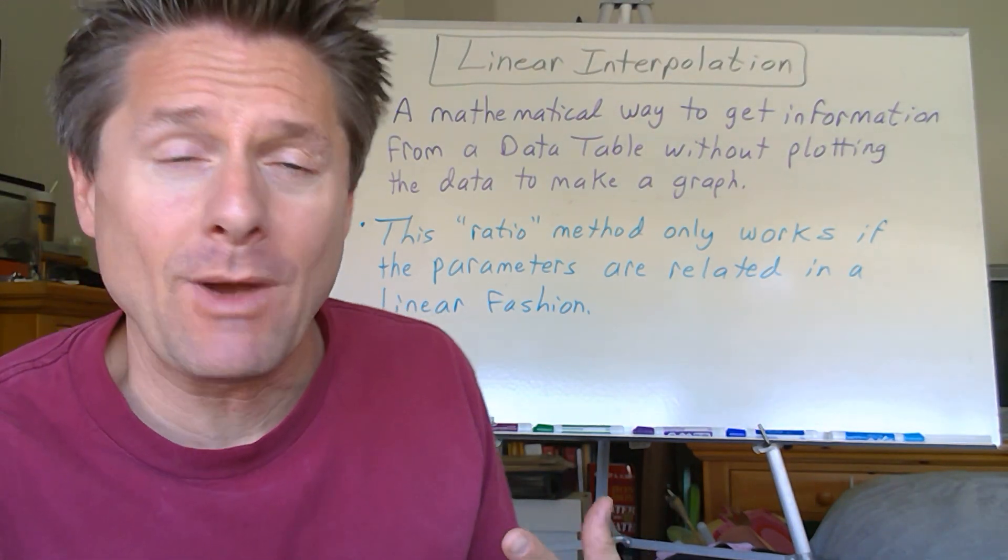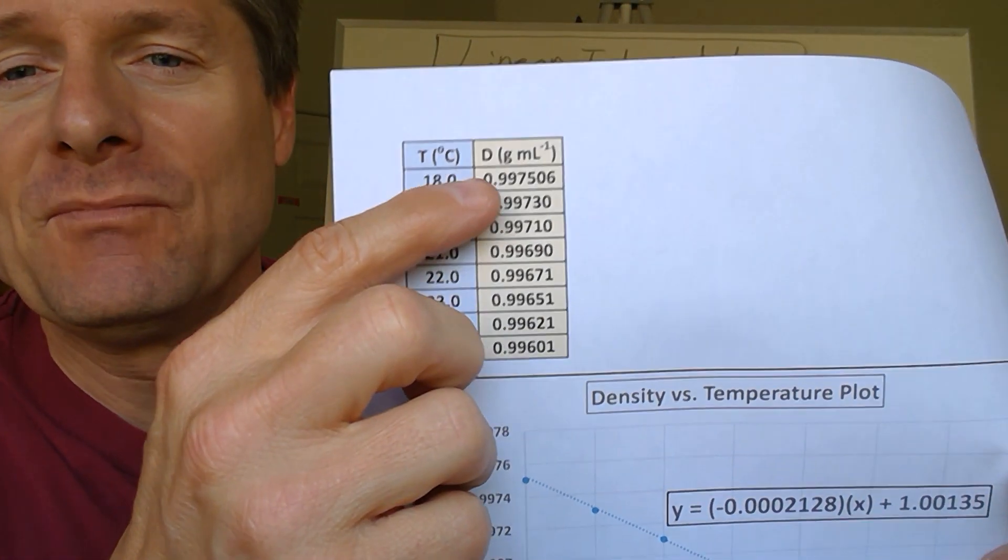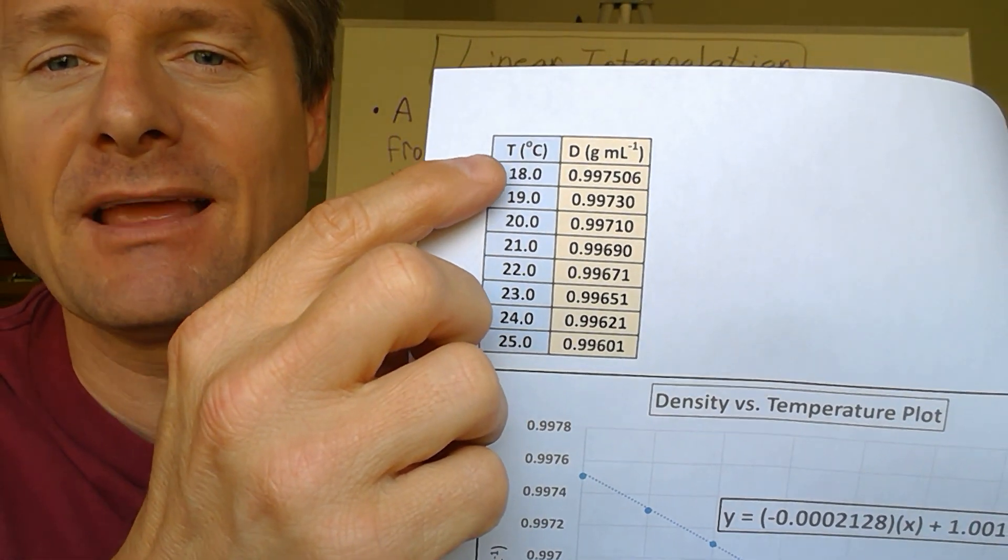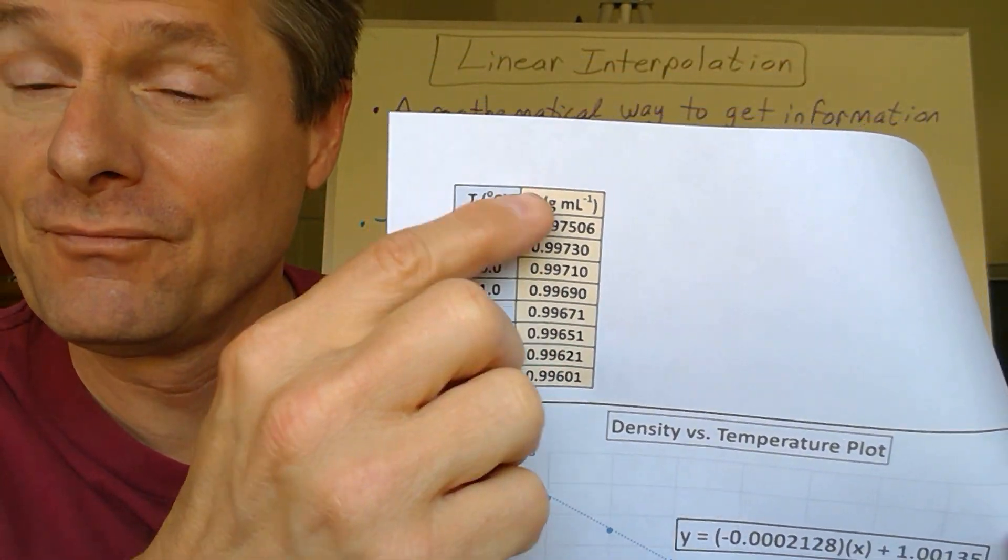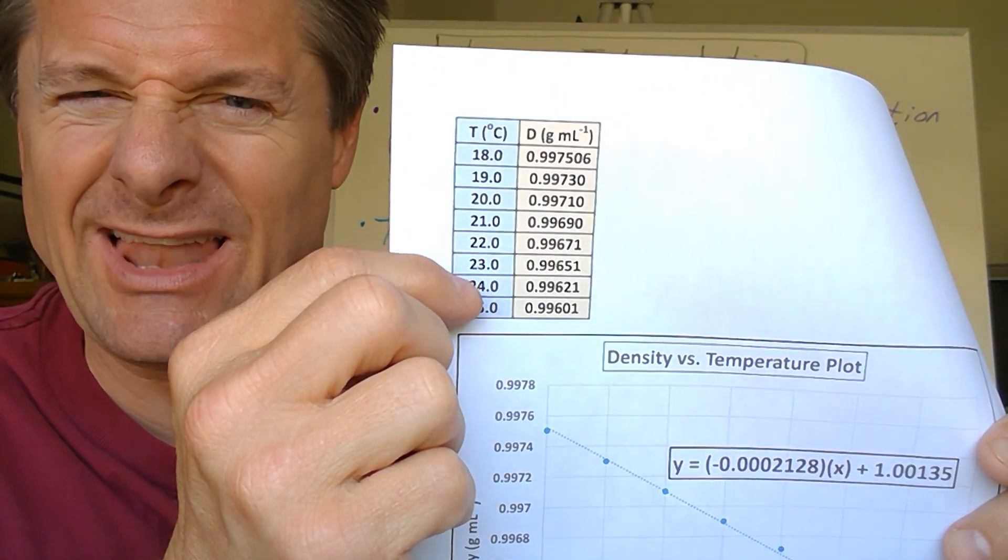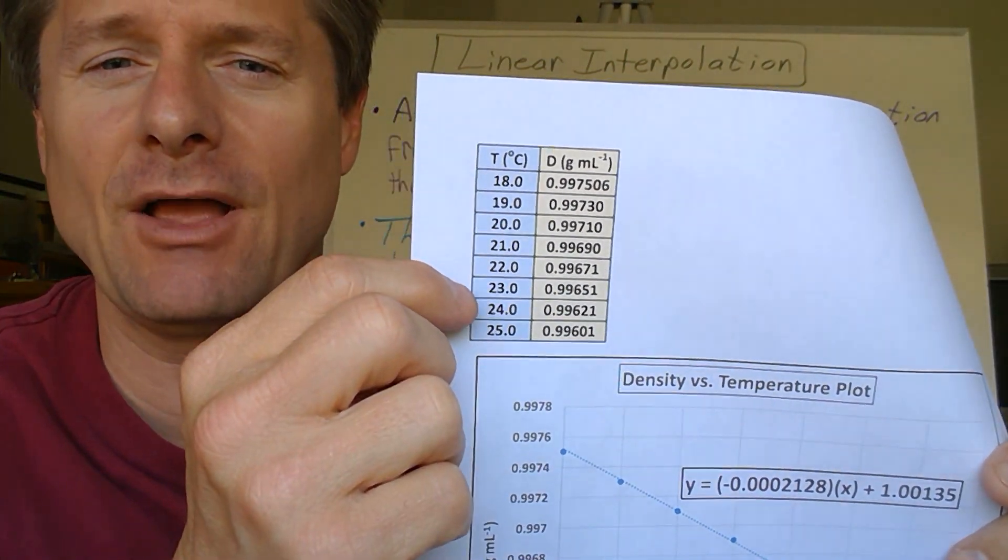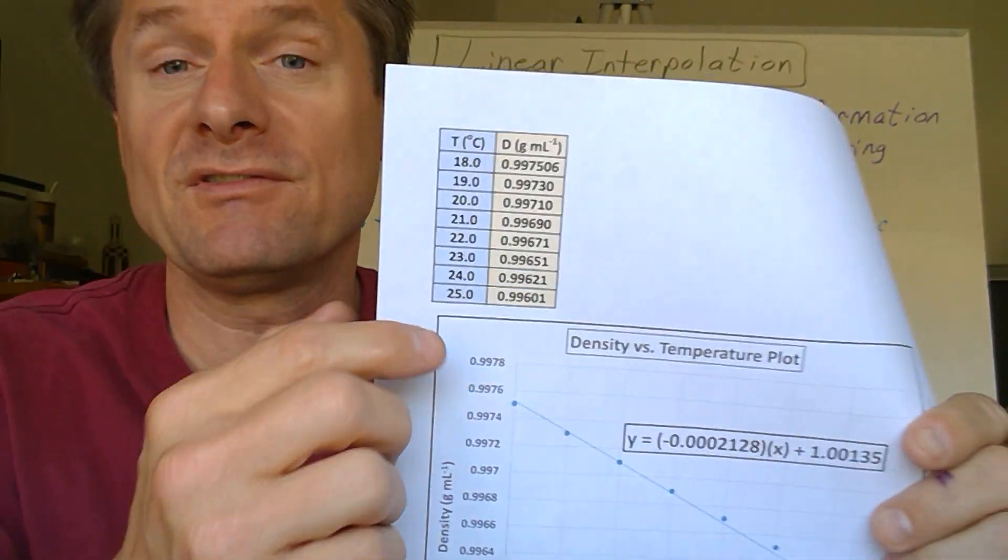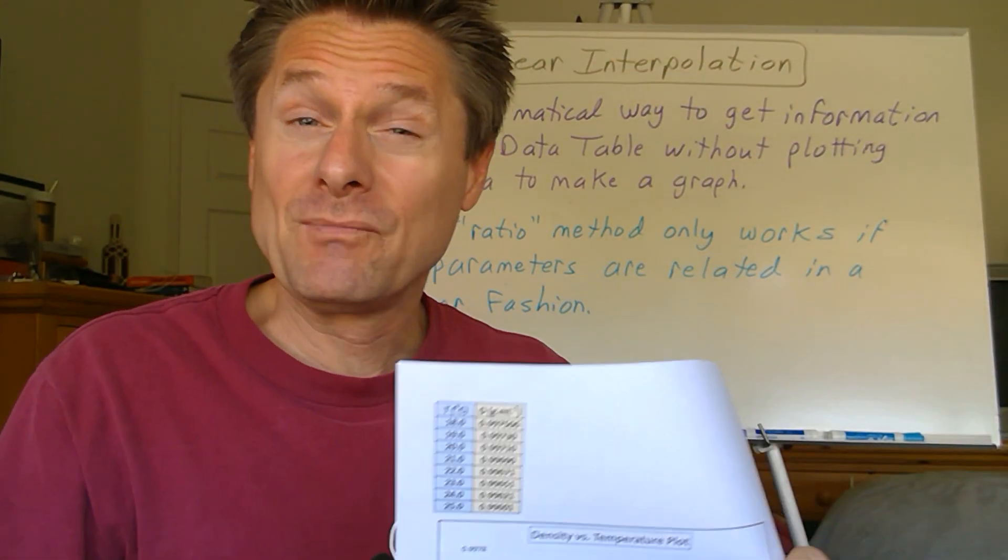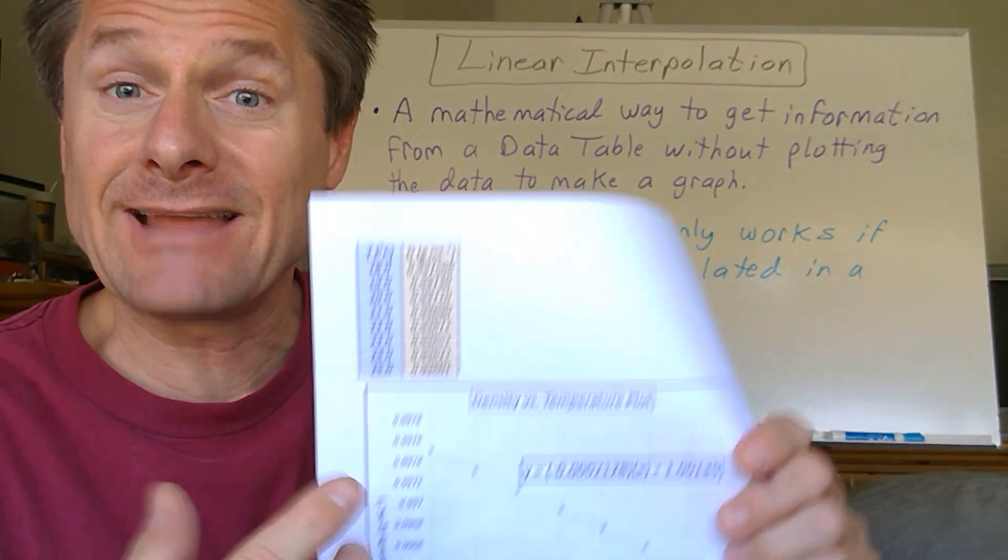Essentially what we're doing is answering the question: if we got some data, like I showed last time, the density dependency on temperature, and you have this data table, and you've got, say in lab, a temperature in between the lines on the data table. You're like, what if the temperature is 18.7 degrees Celsius or 21.4 degrees Celsius? It's not on the data table, and you can't guess in chemistry. So there's only two ways to extract that data.